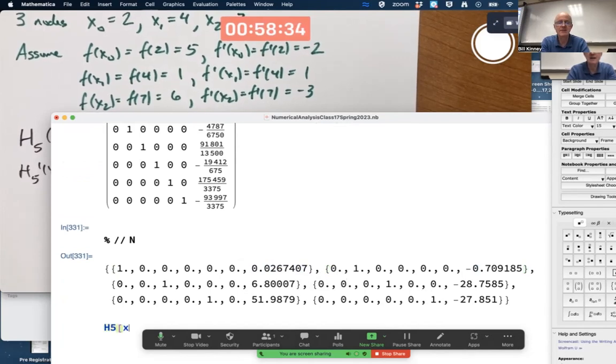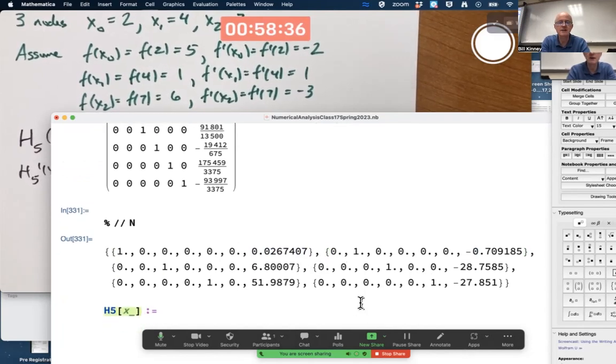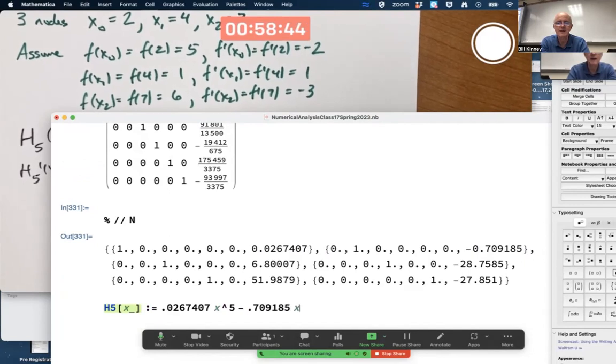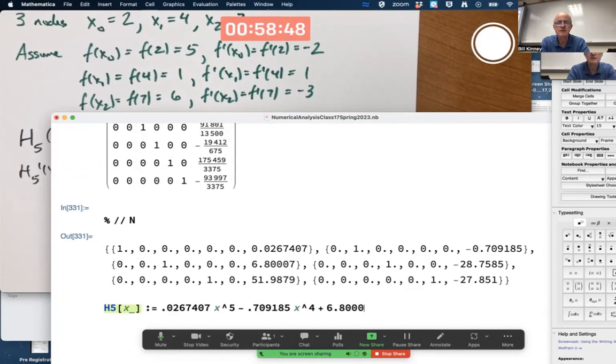So it looks like H5 of X should be approximately, let's go ahead and type it in with the decimals. 0.0267407 X to the fifth minus 0.709185X to the fourth plus 6.8007X cubed minus 28.7585X squared plus 51.9879X minus 27.851.